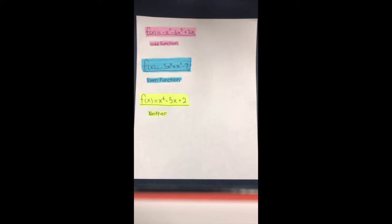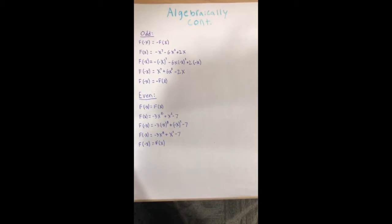Finally, I will explain algebraically how we can determine odd functions, even functions, and neither. In the odd function, we can determine if it's odd since the exponents on the x values are all odd. However, it cannot have a constant value or it will not go through the origin. Whereas even functions have a similar rule, where all the exponents need to be even on the x values. However, it can have a constant value and still remain symmetrical on the y-axis. Whereas neither has a mixture of even and odd exponents on the x values and constants.